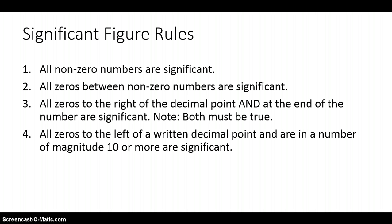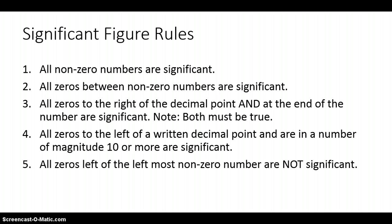Rule number four: all zeros to the left of a written decimal point that are in a number of magnitude ten or more are significant. Rule number five, the final rule: all zeros to the left of the leftmost non-zero number are not significant.